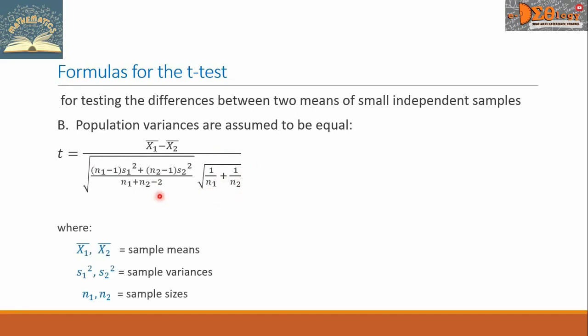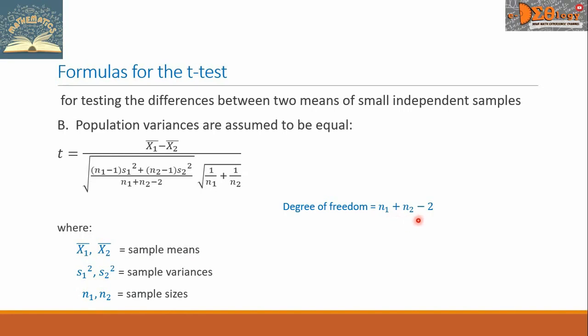Here, x-bar sub 1 and x-bar sub 2 are the sample means; S sub 1 squared and S sub 2 squared are the sample variances; and N sub 1 and N sub 2 are the sample sizes. For the degree of freedom, we use the formula N sub 1 plus N sub 2 minus 2.